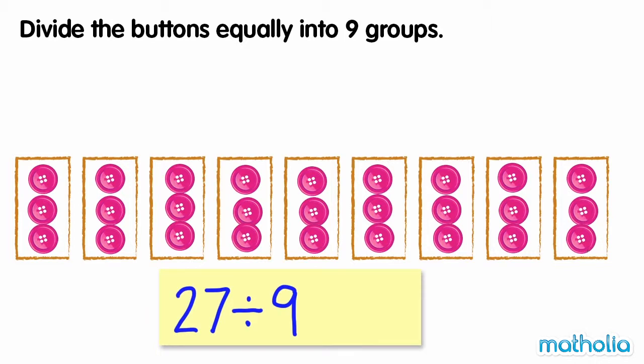We have used up all of the buttons. In each group there are 3 buttons. So 27 divide 9 equals 3.